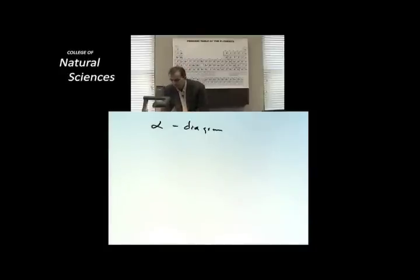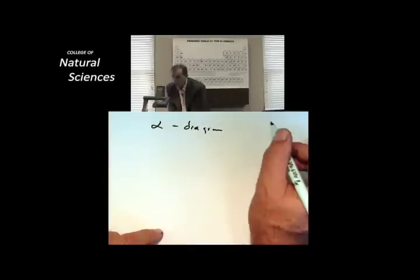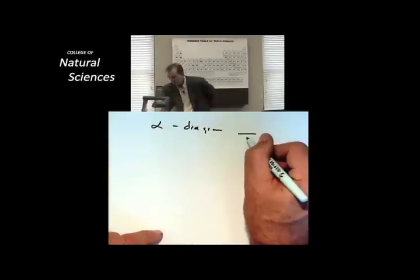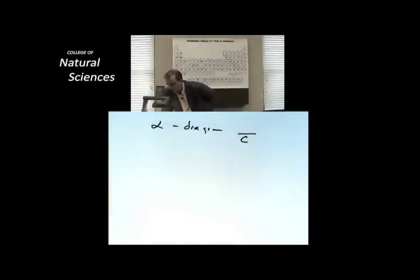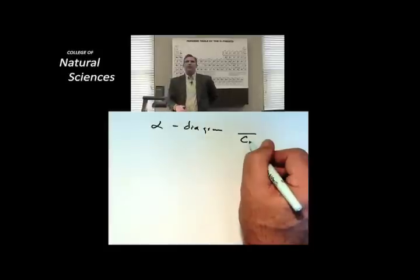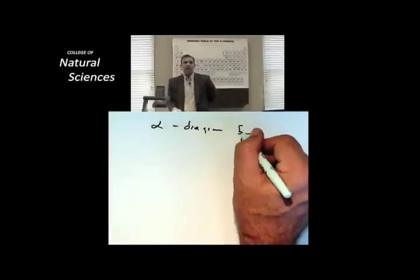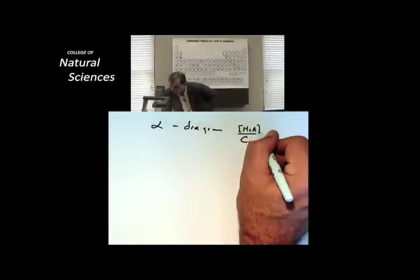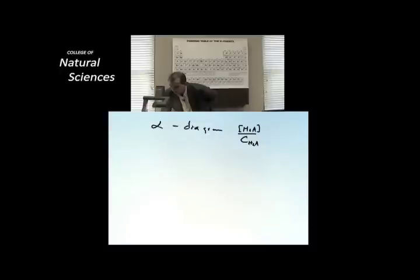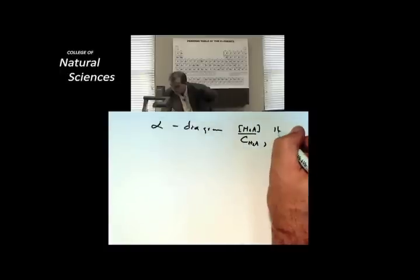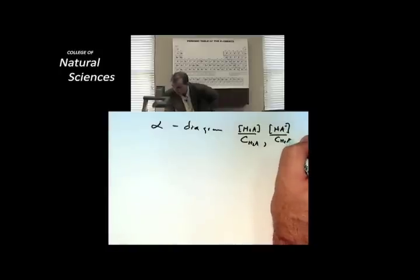By that I mean I'm going to say something like, let's suppose I have a starting analytical concentration of my acid. So this is all of the acid that went into solution, it was H2A. What fraction of it at any given pH is H2A? What fraction of it at any given pH is HA minus? What fraction of it at any given pH is A minus 2?